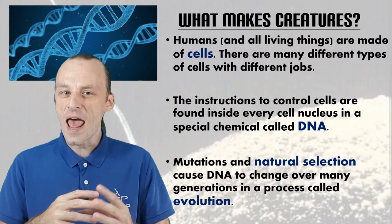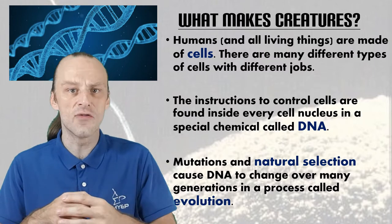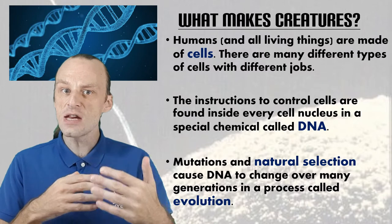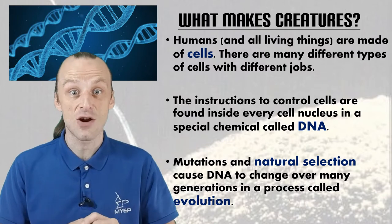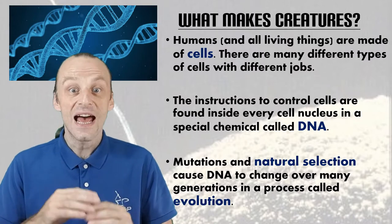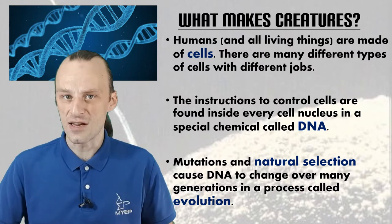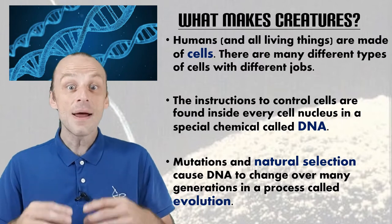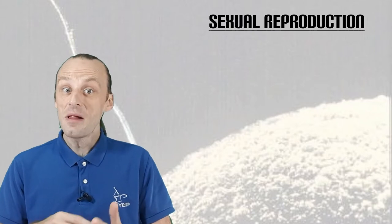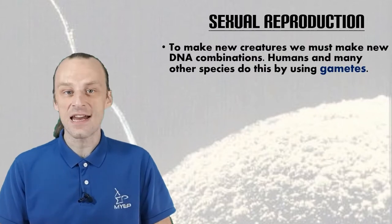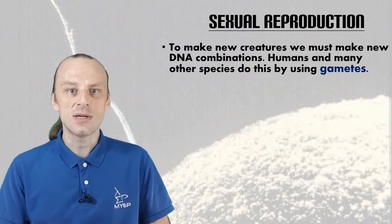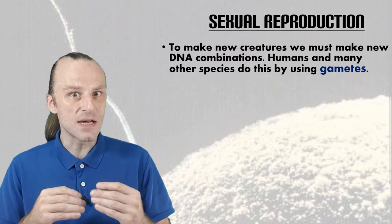DNA and the genetic code can change over time. Mutations and natural selection cause it to change over many, many generations so that a species can change and get new traits — and this is the process that we call evolution. But how do we make a new organism and a new generation? Well, a new organism needs a new DNA combination, and humans as well as many other species use something called gametes to do this.